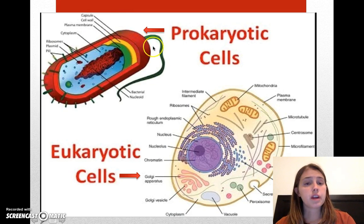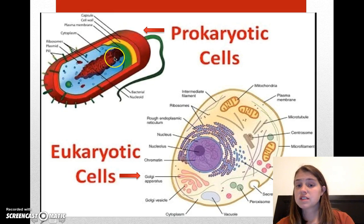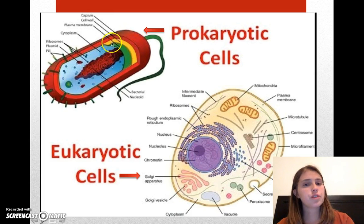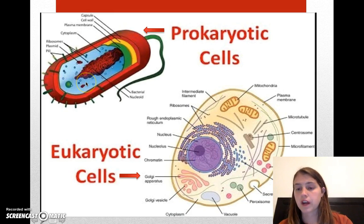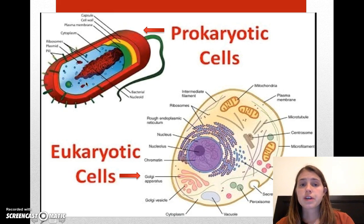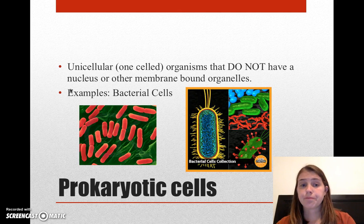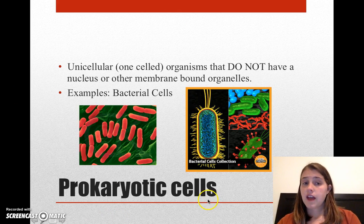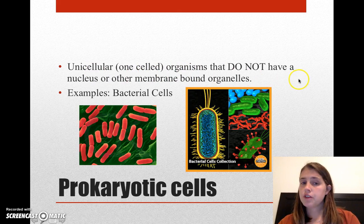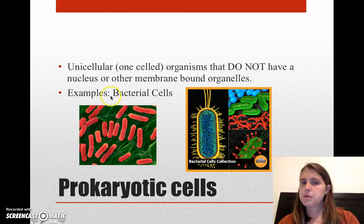If you look at the prokaryotic cell, it's pretty much just open space, aside from the chromosomes. All the stuff that's trapped in the nucleus in a eukaryotic cell is just floating around freely in a prokaryotic cell. Prokaryotic cells are unicellular, or one-celled, organisms, and they don't have a nucleus or other membrane-bound organelles. An example of a prokaryotic organism would be bacteria.